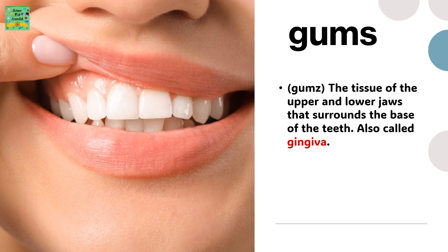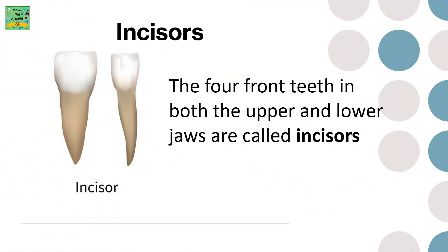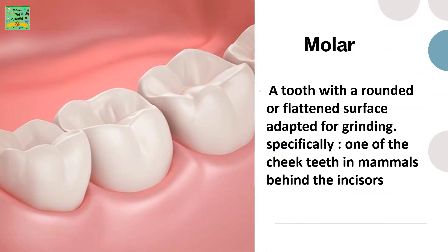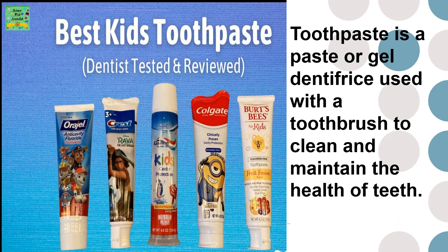Gums: the tissue of the upper and lower jaw that surrounds the base of the teeth, also called gingiva. Incisors: the four front teeth in both the upper and lower jaws. Molar: a tooth with a rounded or flattened surface adapted for grinding, specifically one of the cheek teeth in mammals behind the incisors. Toothpaste: a paste or gel dentifrice used with a toothbrush to clean and maintain the health of teeth.